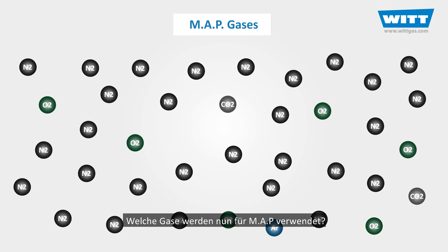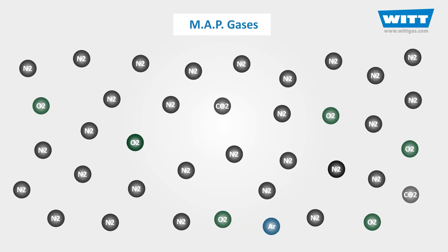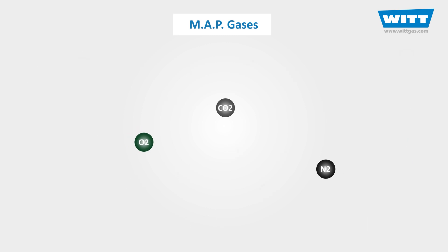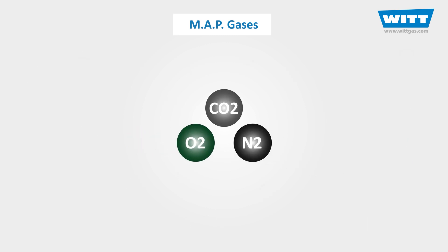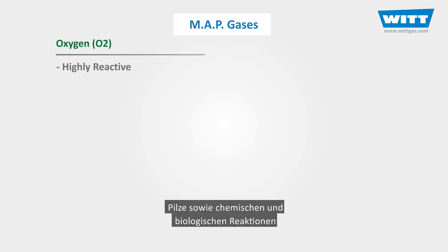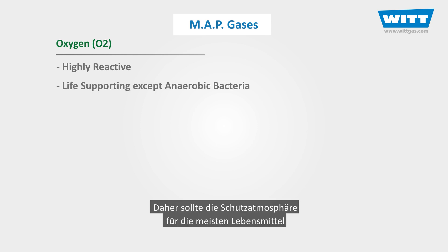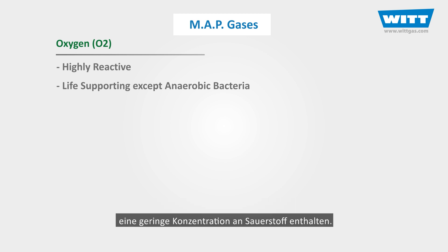So, what are these gases we use for MAP? All of these come from the air. The first one is oxygen, or O2. Oxygen is highly reactive and most common spoilage bacteria, fungi, and chemical and biological reactions require oxygen to live and grow. Therefore, to increase the shelf life of most foods, the pack atmosphere should contain a low concentration of oxygen.